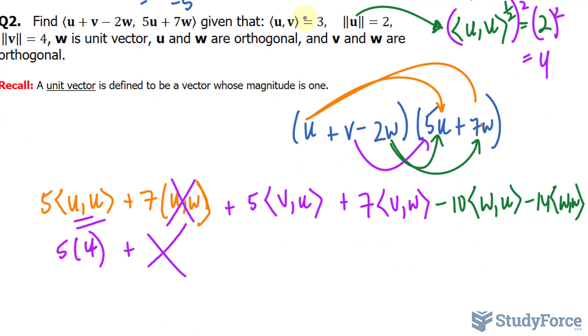Now, we have v and u. Well, they tell us it's 3. So, plus 5 times 3. Plus 7 times v and w. They're orthogonal. Multiply by 0, it's nothing.